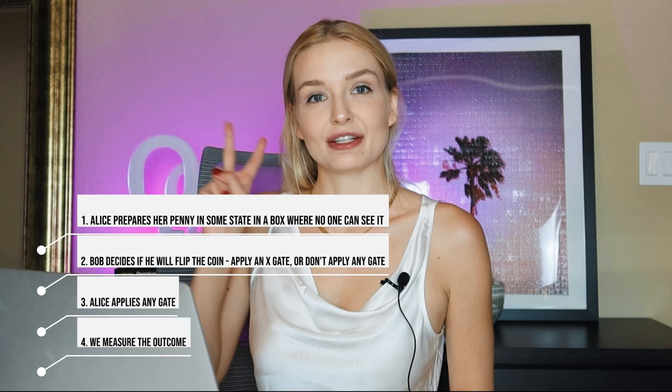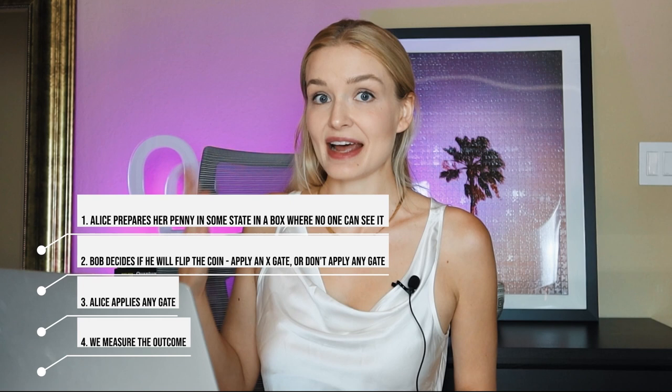So first, let's talk about the steps of quantum penny flip. Number one, Alice takes the penny and prepares it in some state in a box where nobody else can see it. Number two, Bob decides if he actually wants to flip that penny. So he's going to figure out whether he wants to apply an X gate to it or not. Number three, then Alice can apply any gate. And number four, we measure the outcome.